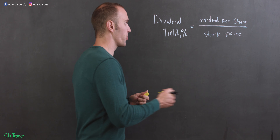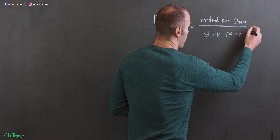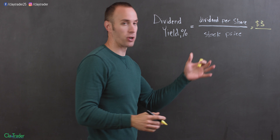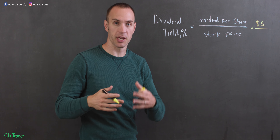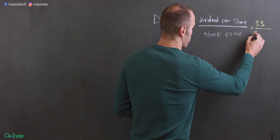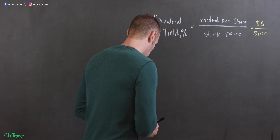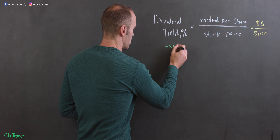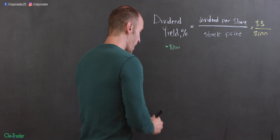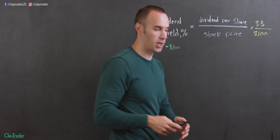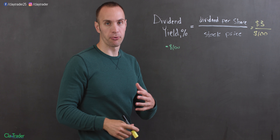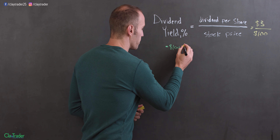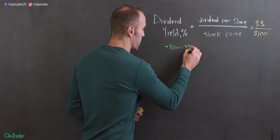So for example's sake, let's say there's a company out there doing $3 per share — so every share you own in that company, you're going to get $3. And let's say the stock price is currently at $100. So we're going to track the stock price here. At $100, three divided by 100 is 0.03, and then multiply by 100 to turn it into a percentage. So 3% is what the yield is going to be at that point in time.